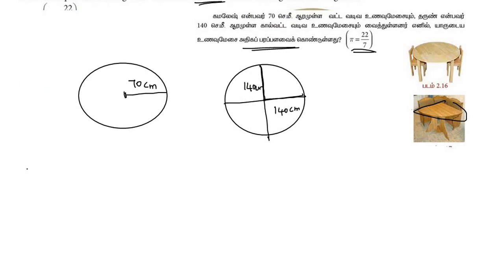First, the area of the circle. Area of circle is equal to π r². So π r² equals π into r equals 70 squared.